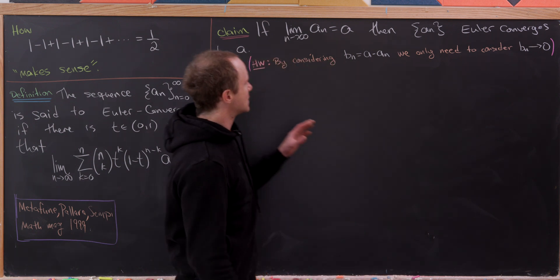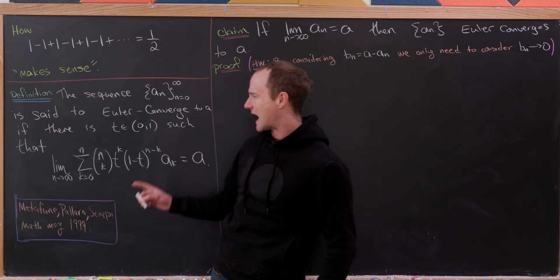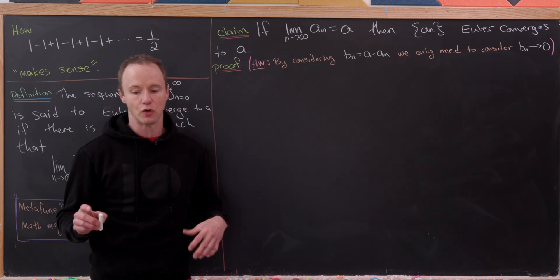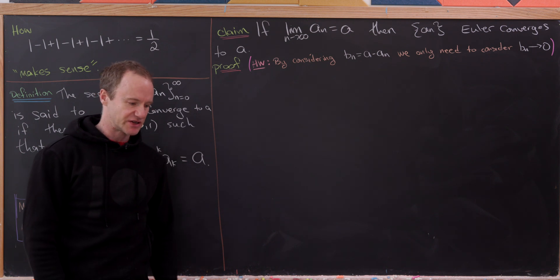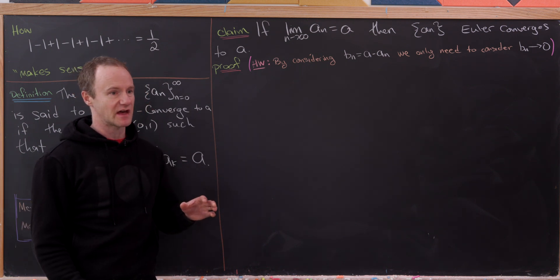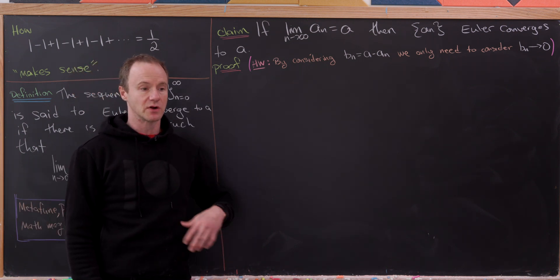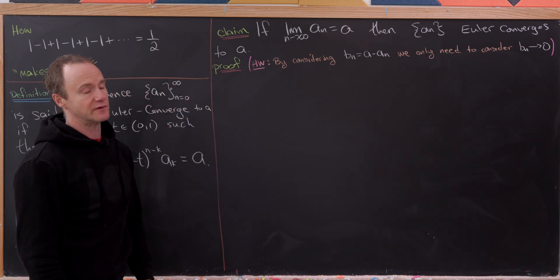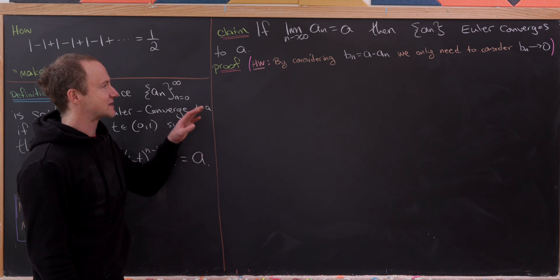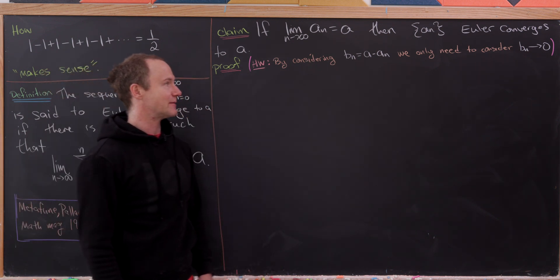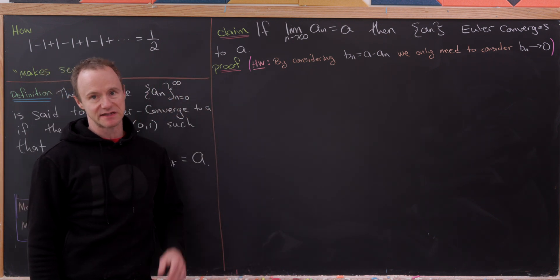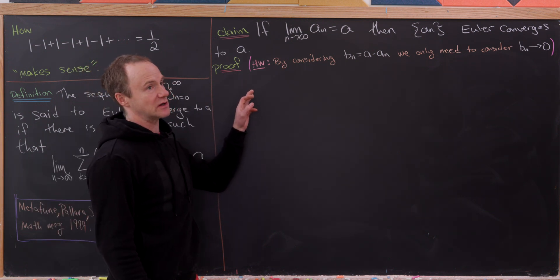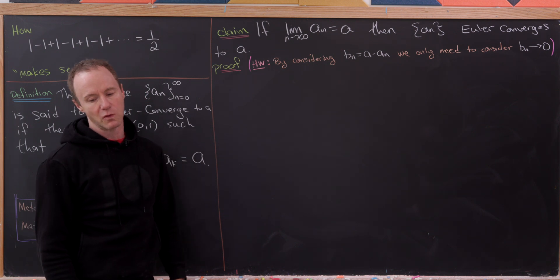Let's make sure that this idea of Euler convergence can be seen as some sort of generalization of normal convergence. To be a generalization, everything that normally converges to a certain number should also Euler converge to that number — and that's exactly what we're going to prove here. By considering the sequence b_n which equals a minus a_n, we only really need to consider sequences that converge to zero. I'll leave that step as a homework exercise.